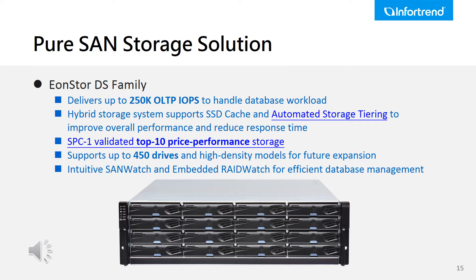Now let's talk about the SAN storage, the EonStore DS family. This series can provide up to 250K OLTP IOPS. In addition to the SATA SSD bridgeboard solution, it also supports a combination of high-performance SSD and high-capacity HDD, with data services like automatic storage tiering to support entry-to-mid-range scale database systems. The DS model has been recognized as a top-10 SPC-1 price-performance ratio in OLTP IOPS, competing with other world-leading storage vendors. For example, our DS3000 with 218K OLTP IOPS supports capacity expansion up to 444 drives by adding JBOD. Users can manage their SAN storage easily with SANwatch, InfoTrend's proprietary user-friendly management GUI.